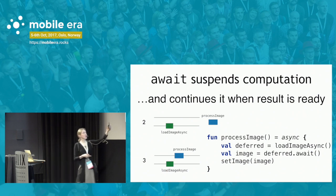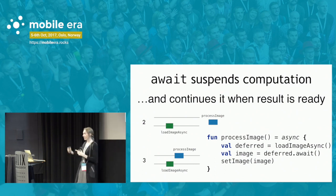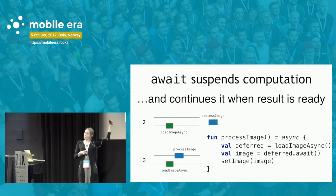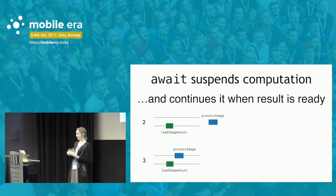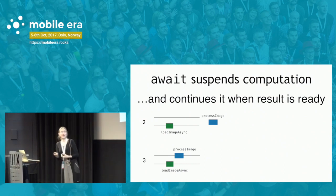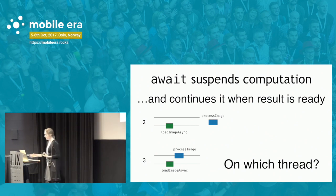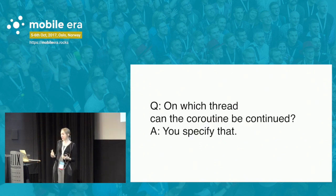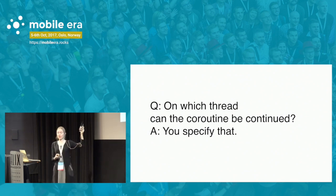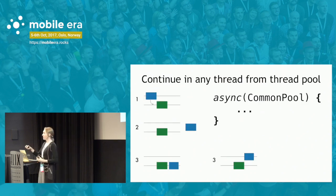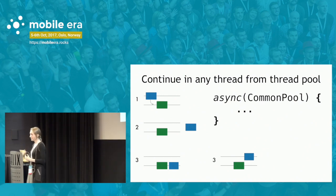Await is what suspends the computation — it instructs the compiler to put the computation aside and also continues the computation when the result is ready. When load image finishes and the result is available, we can return the suspended blue computation to our executor and threads and continue to execute it. You may ask: on which thread does the suspended computation get continued? The answer is that you can specify that by passing an argument to the async function.